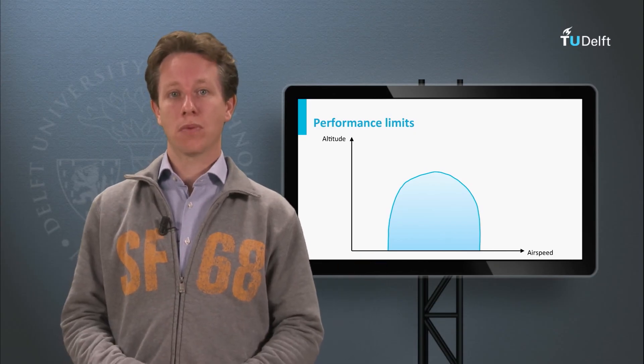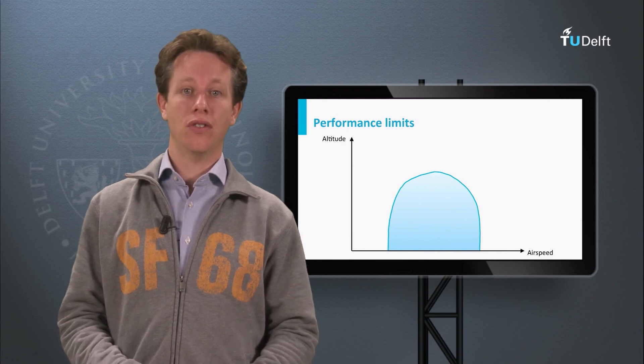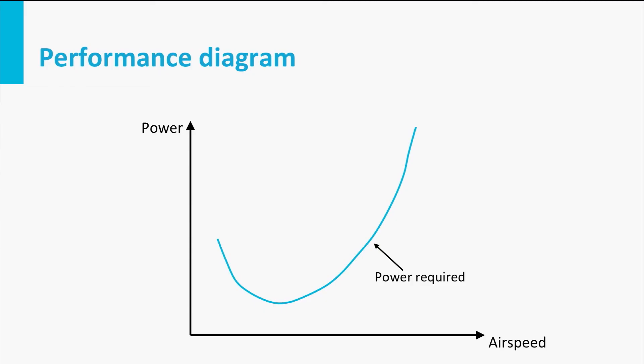Let's start with the specific performance diagram for sea level conditions. If the engine provides enough thrust, the pilot can choose any airspeed on the curve. To fly slowly, you need to increase the angle of attack to create enough lift. At high airspeed, the dynamic pressure helps create lift and the airplane can fly at a small angle of attack. So each point on the diagram relates to a specific angle of attack, and thus a specific CL and CD.